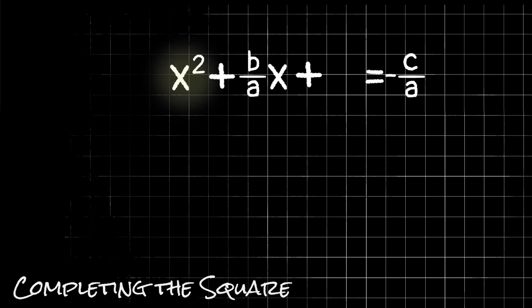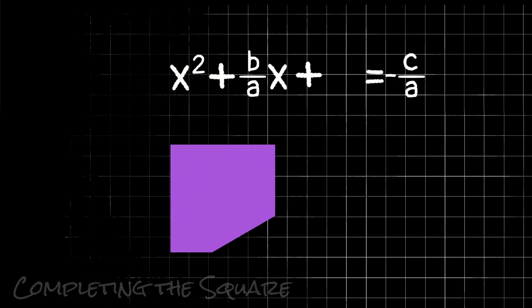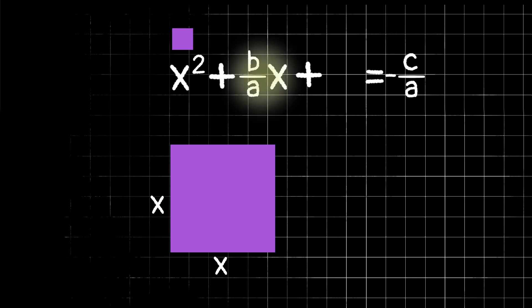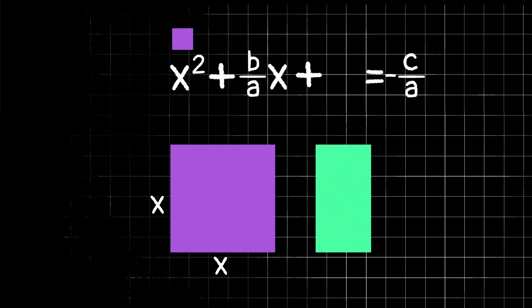So for example, look at this x squared term. We can draw this as a square with area x squared. Or in other words, a square with side lengths x. For the second term, b over a x, that's not a square. However, we can still draw a figure that has the area b over a x. And it would be a rectangle with one side length being x and the other side length being b over a. Just to double check, we know that the area of a rectangle is length times width. So if we took x times b over a, that does in fact get us right back to our second term.